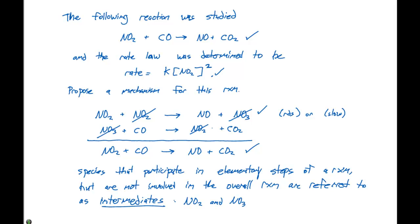Then the slowest step is our rate determining step. We add everything up together, we introduce this term called intermediates. And this is what we would write down as a proposed mechanism for this particular reaction that was studied when we were given the rate law that we have here as K times NO2 squared.